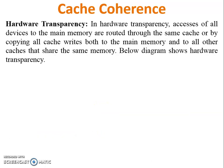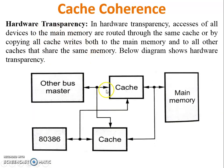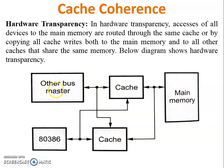In hardware transparency, accesses of all devices to main memory are routed through the same cache, or by copying all cache writes both to main memory and to all other caches. In the diagram, there are two separate cache memories — one for I/O devices and one for the processor. Whenever any hardware or processor makes a change, both cache memories are updated simultaneously. Both are also connected to main memory, which is updated as well.